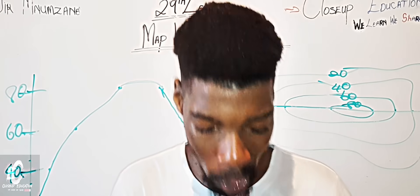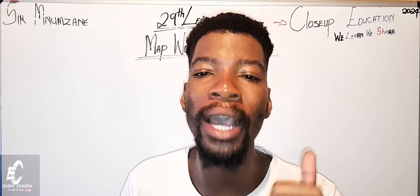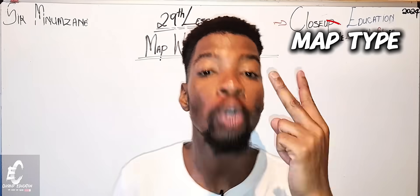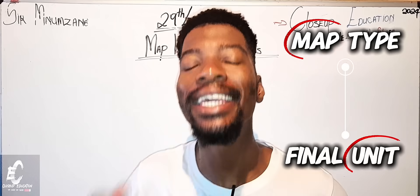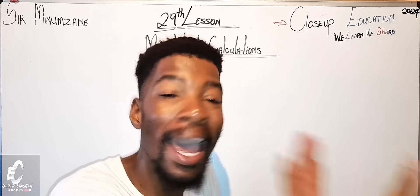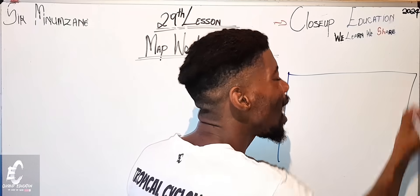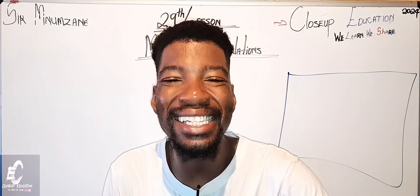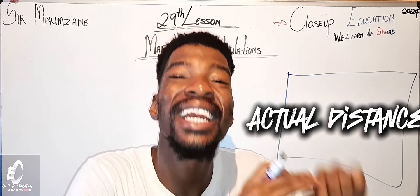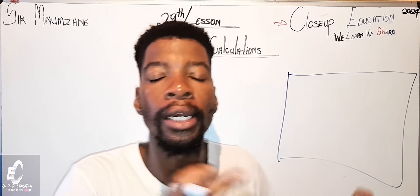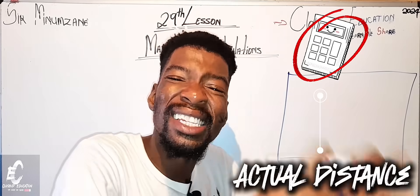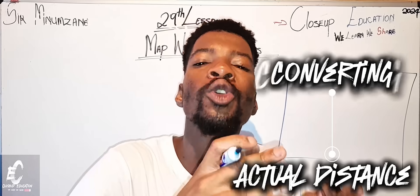Now let's move into map work calculations. In order to calculate anything, the first thing to understand is: one, which map are you calculating — topographic or orthophoto? Two, does the answer need to be in meters or in kilometers? These are the most important things to identify when reading a map calculation question. I've already released a lesson about actual distance, so please watch that video first.